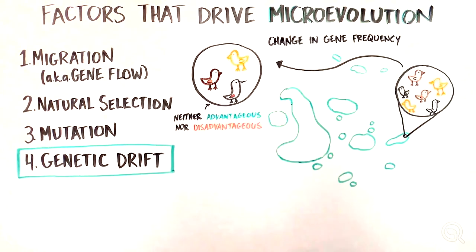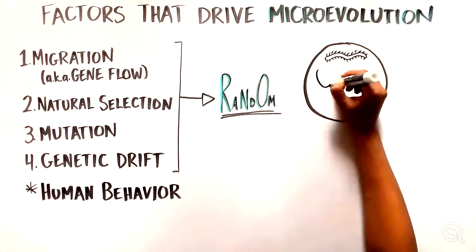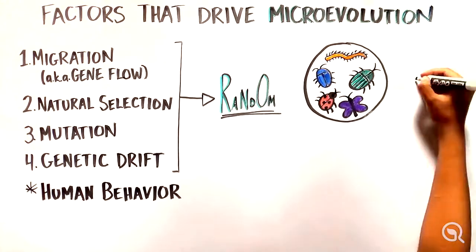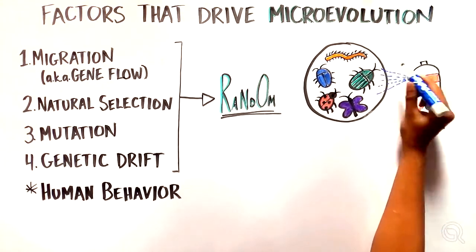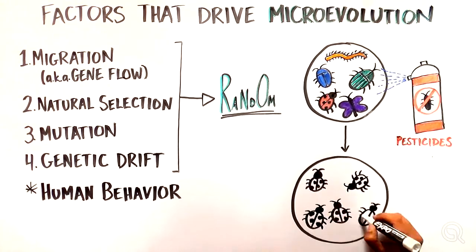While these examples we've talked about so far refer to random events driving evolution, there are examples of how human behavior can drive microevolution. For example, in response to pesticide use, some insects have developed resistance to those chemicals, allowing them to survive when exposed to those pesticides.